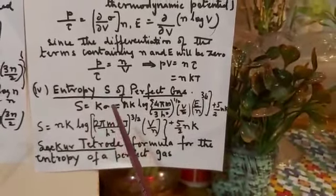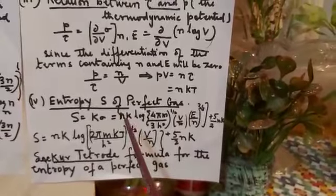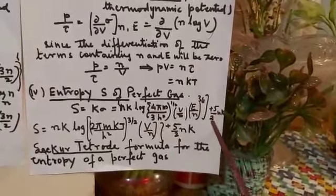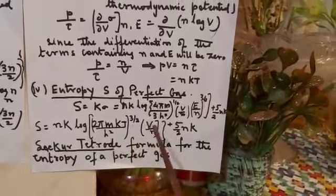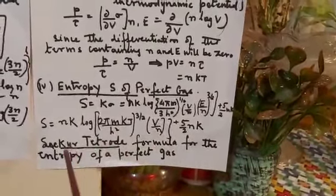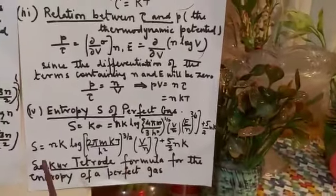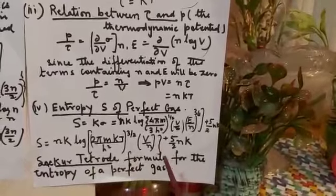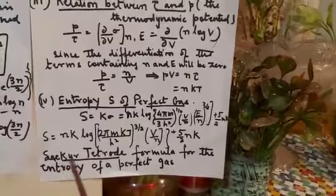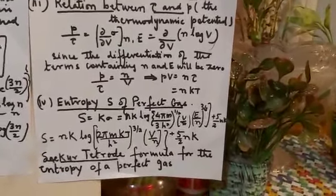For the entropy S of a perfect gas: S = k sigma* = N k log[(4 pi m / 3h²)^(3/2) * (V/N) * (E/N)^(3/2)] + (5/2) N k. This is the Sackur-Tetrode formula for the entropy of a perfect gas — a very very important equation of statistical physics. Thank you.